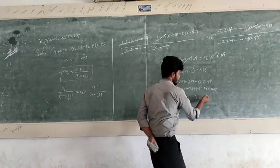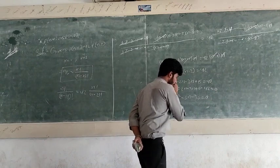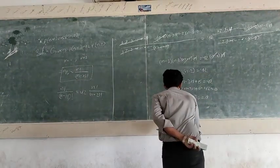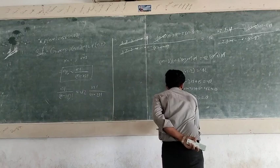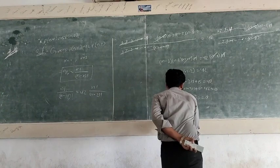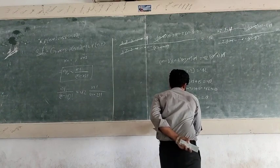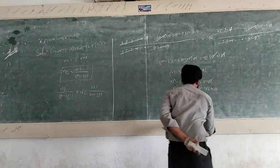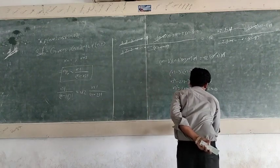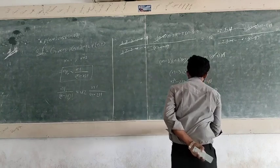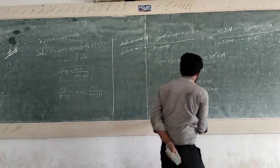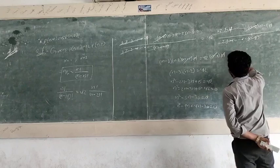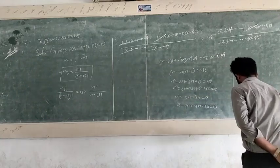Factoring the quadratic: n² − 9n + 4n − 36 = 0.